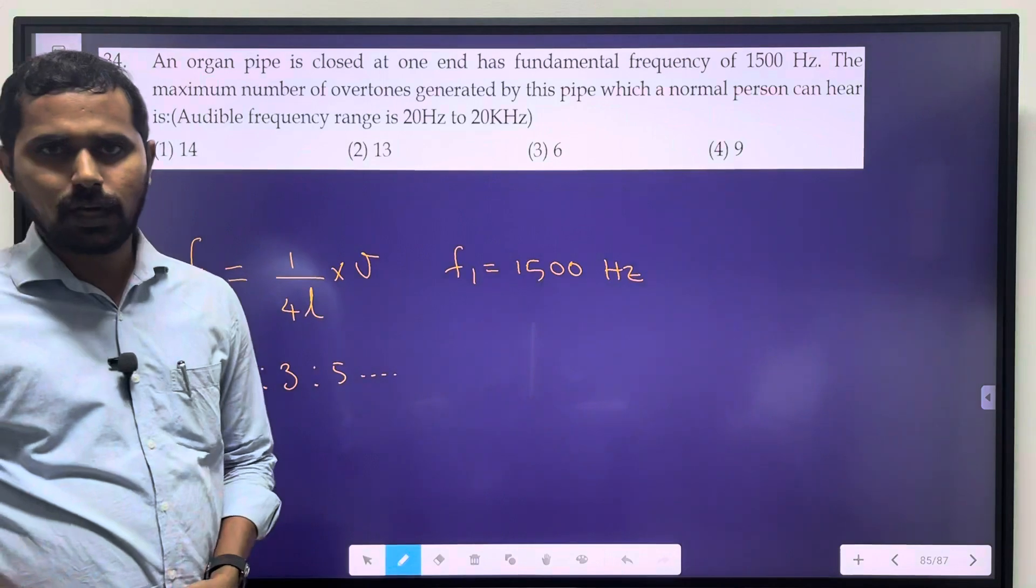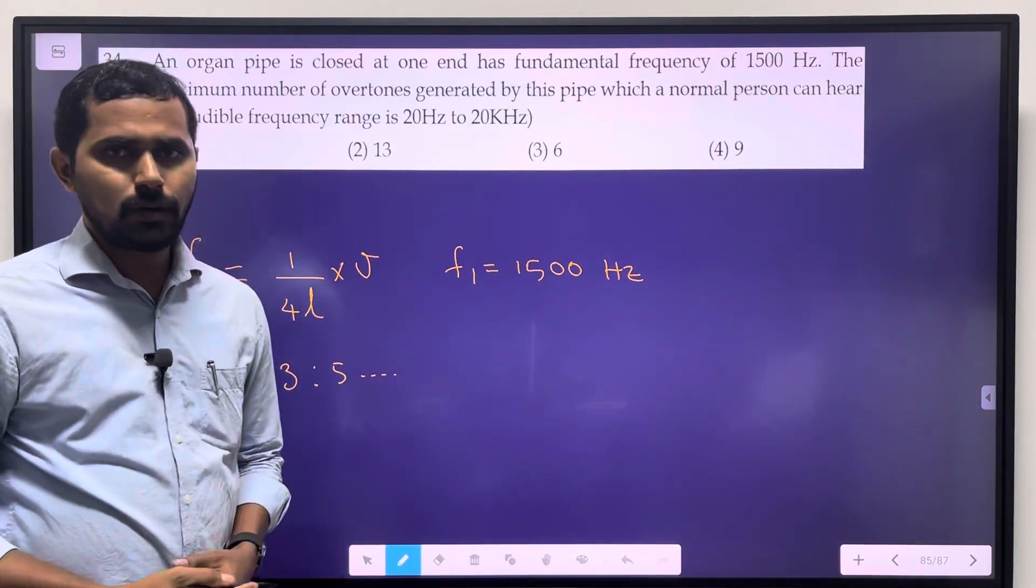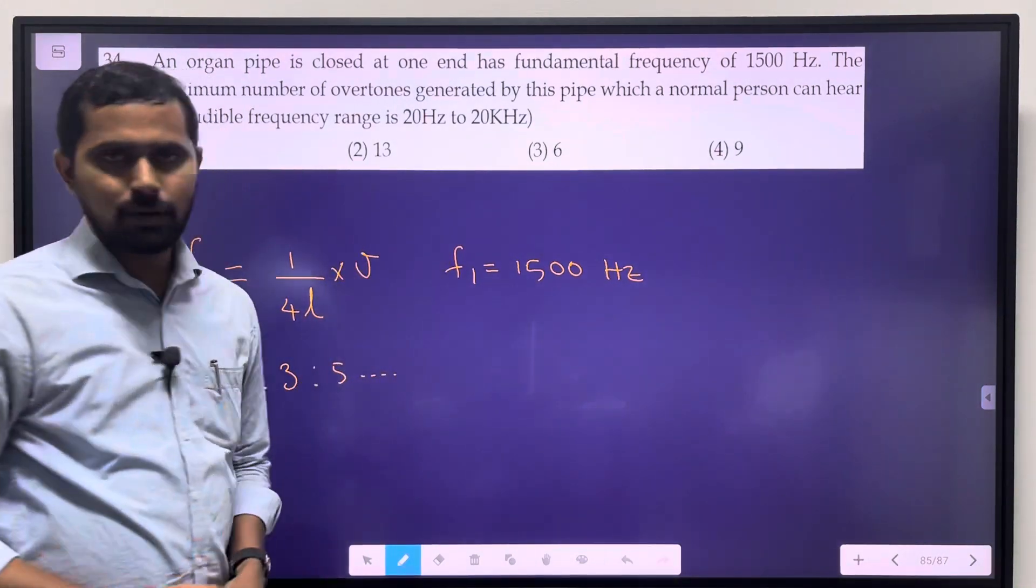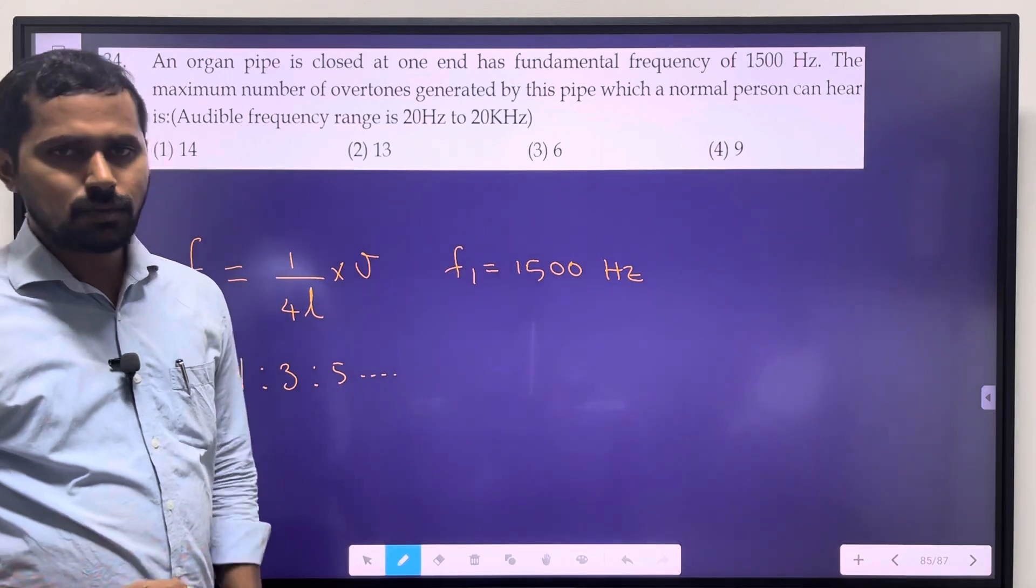Now we have a question: what do we have to find out? Up to the hearing limit of a human, 20,000 Hz.